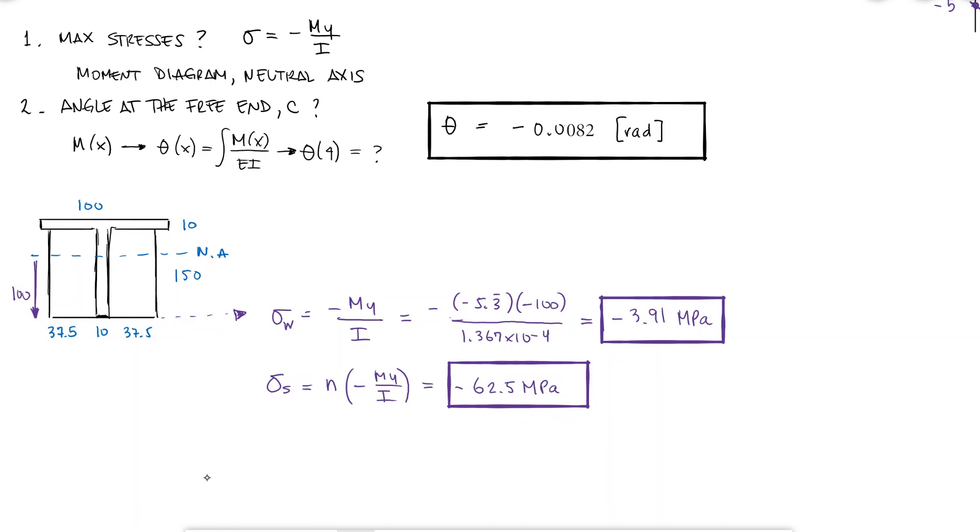The stress at the top of the beam, which is also made out of steel, also requires to use the ratio between elastic moduli. The moment is still minus 5.3 repeating and the second moment of area has the same value. The only thing that changes here is the distance from the neutral axis to the top surface. And not only its value, but the fact that that distance is positive.